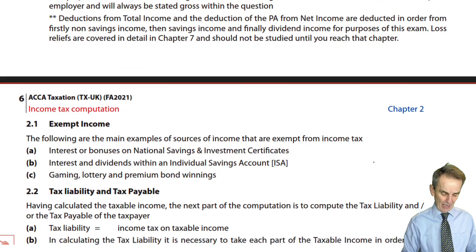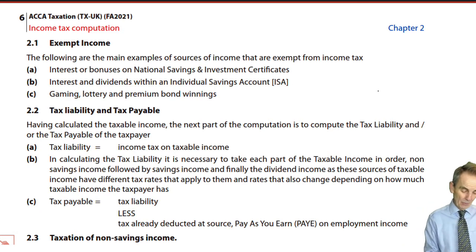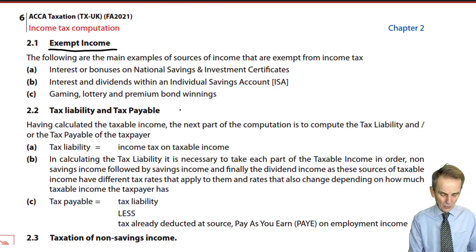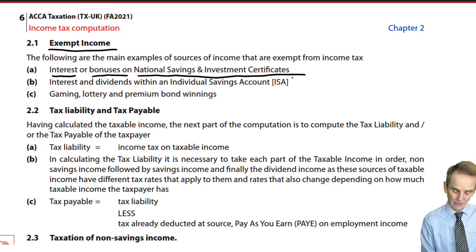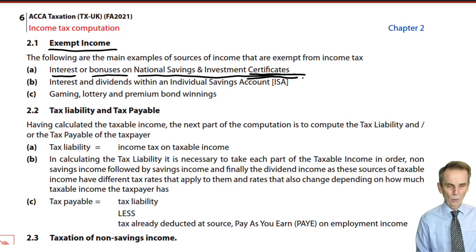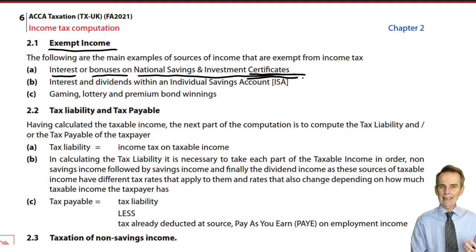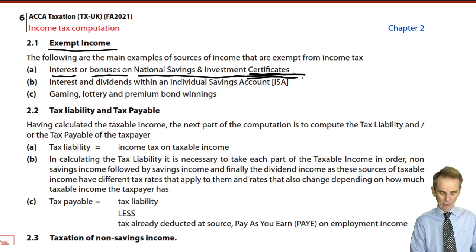Just a couple more things regarding sources of income. There are a few sources of exempt income you need to know. First, interest or bonuses on National Savings and Investment certificates — note it is only certificates that are exempt. If an examiner gives you a National Savings and Investment account paying interest, that interest is not exempt; it is still assessable to income tax.